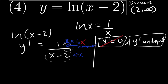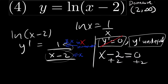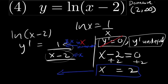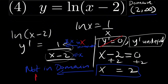Since we have an x in the denominator, the derivative can be undefined. To make this undefined, we take the denominator and set it equal to zero. Adding 2 to both sides gives x equals 2. However, x equals 2 is not in the domain, so there are no critical points.